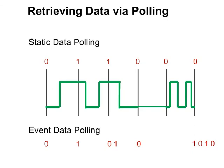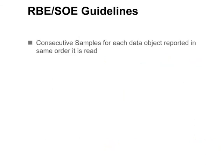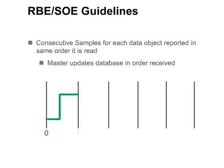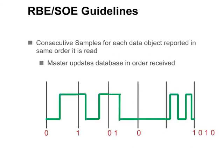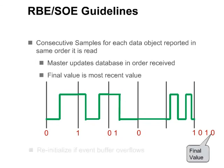If capturing transitions is important, then either the static poll rate must be high enough to capture them, or event polling should be used. The beauty of report by exception and event polling is that all transitions are captured — with timestamps if desired — despite using a slower polling rate. This can potentially reduce bandwidth requirements. When using report by exception, it is important to report all consecutive samples for each data object in the same order it is read, to allow the sequence of event logs to be built. The master station updates its database in the order that data are received, so the final value will be the most recent value. Should the event buffer overflow, however, the master must reinitialize its database by reading all current values.